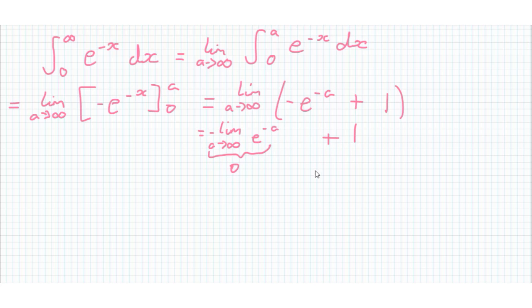This is just 0, so our answer is just 1. And why is that 0? Because remember e to the minus a is like 1 over e to the a, and e to the a as a tends to infinity goes off to infinity so 1 over e to the a goes to 0. That's our first example.